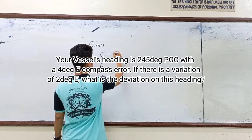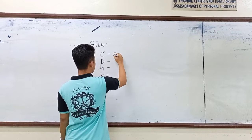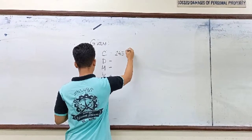Your vessel's heading is 245 degrees by compass with a 4 degrees east compass error. If there is a variation of 2 degrees east, what is the deviation of this heading? In the given scenario we have a compass heading of 245 degrees, a variation of 2 degrees east, and a compass error of 4 degrees easterly.